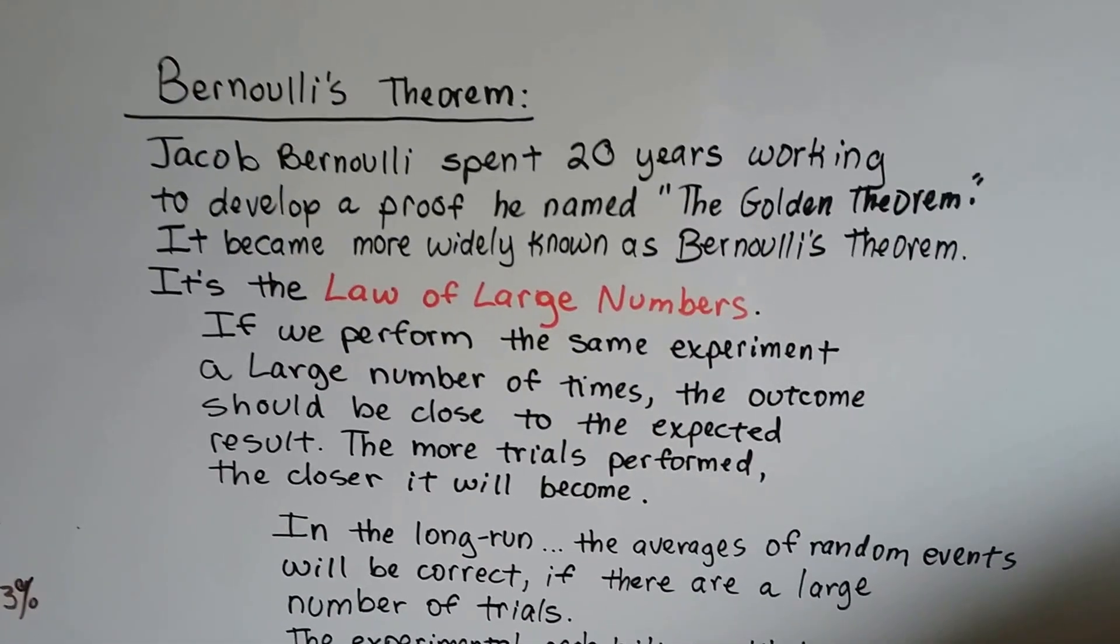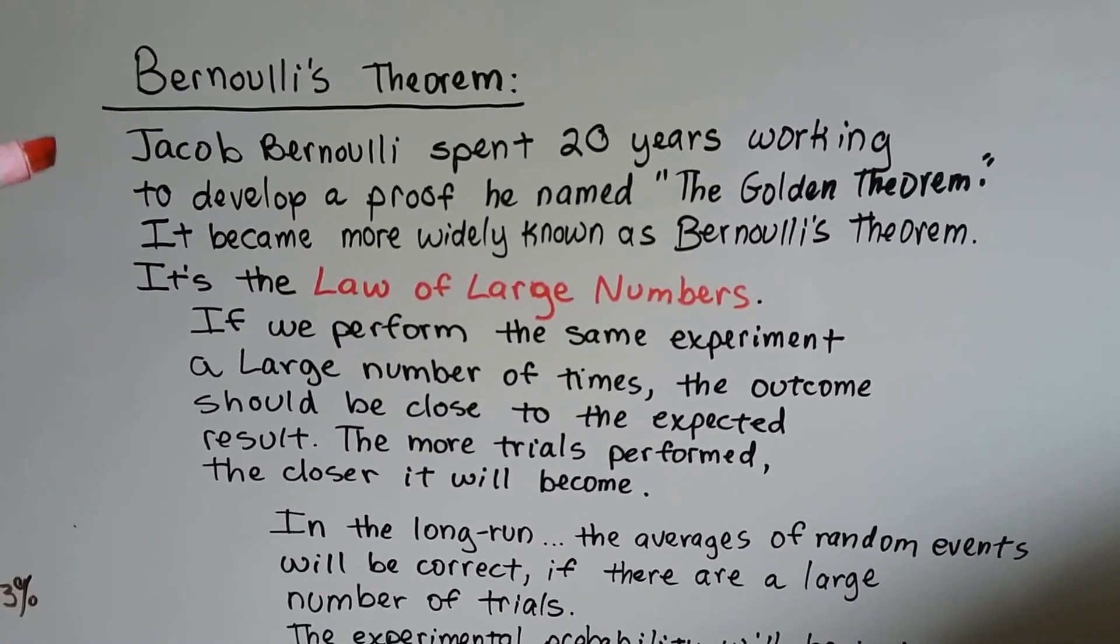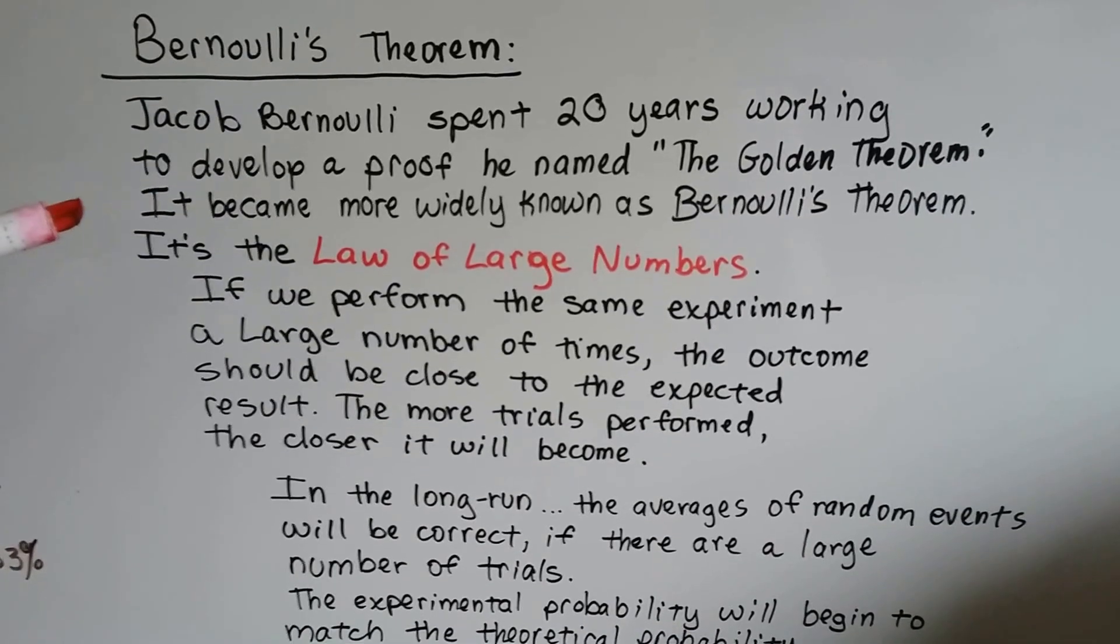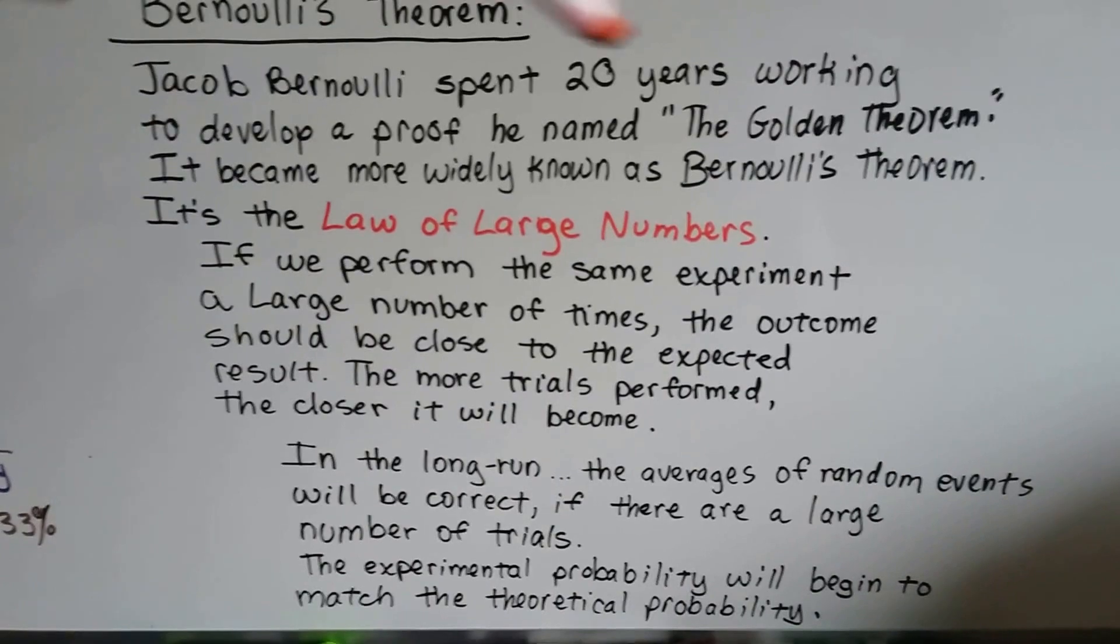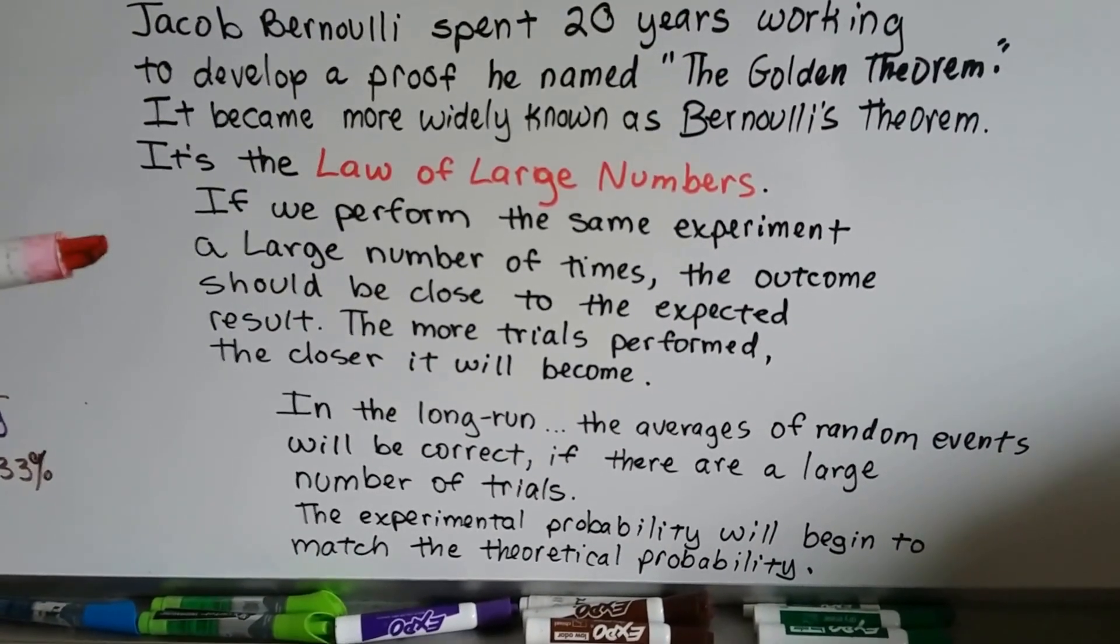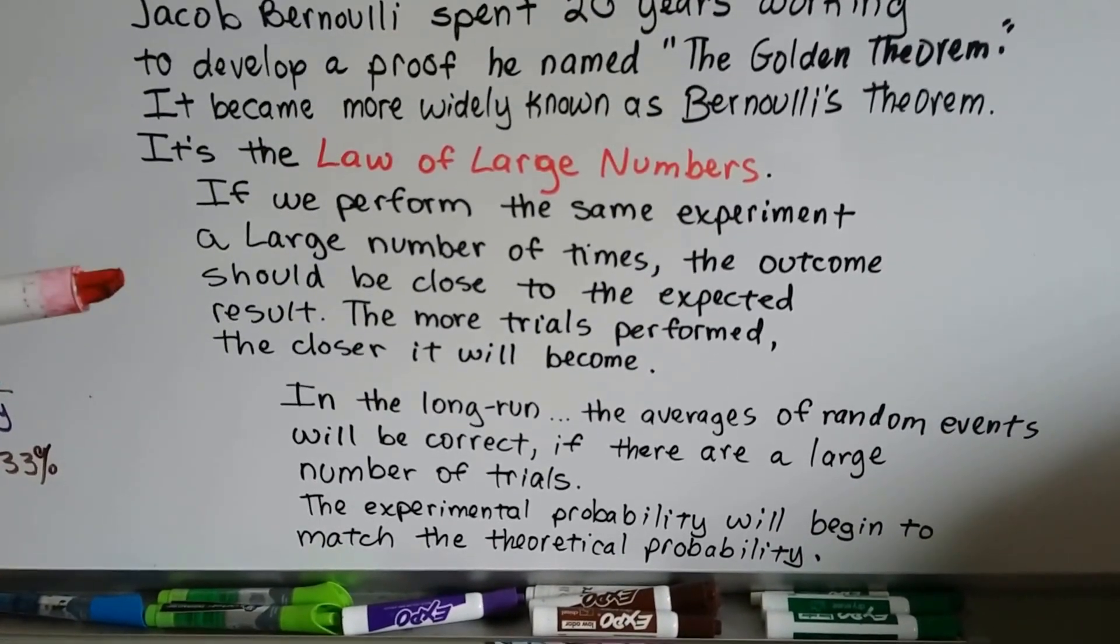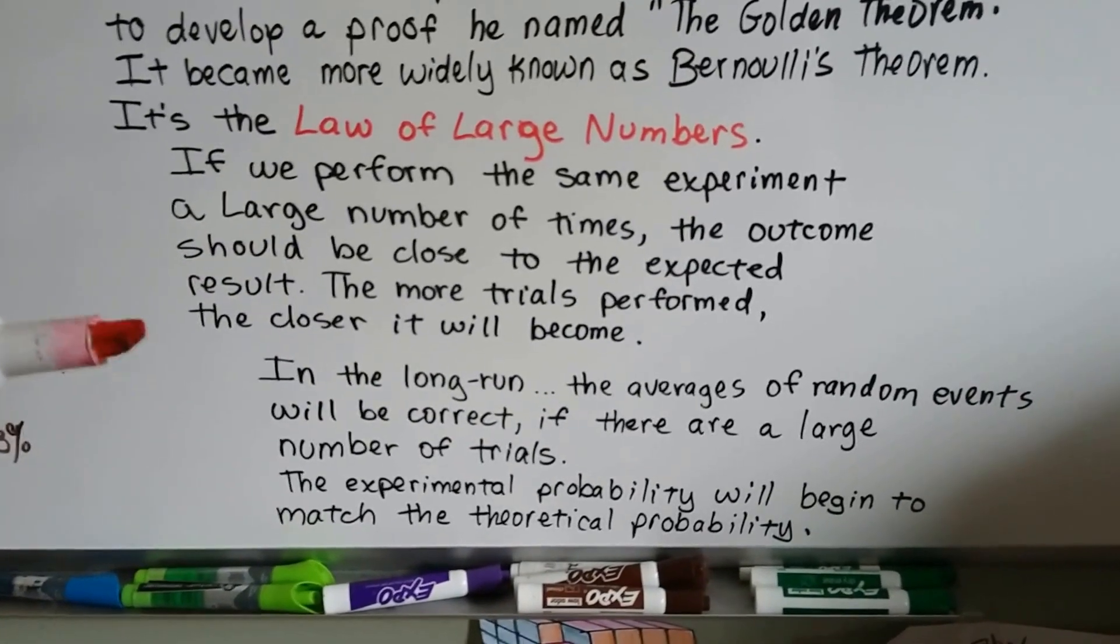Bernoulli's theorem, that's named after Jacob Bernoulli, he spent 20 years working to develop a proof he named the Golden Theorem. And it became more widely known as Bernoulli's theorem, and you're going to hear about this in the future. It's the law of large numbers. It says, if we perform the same experiment a large number of times, the outcome should be close to the expected result. The more trials performed, the closer it'll become.